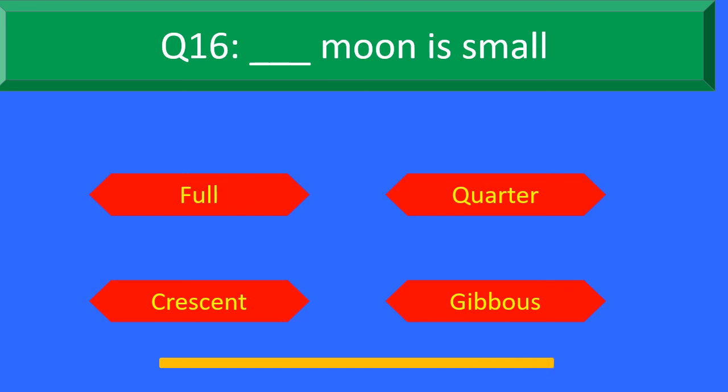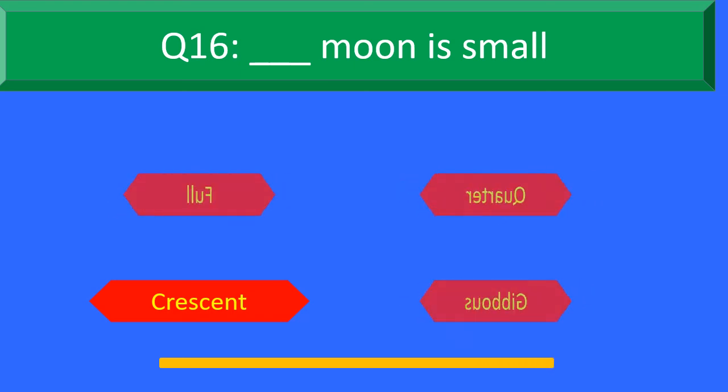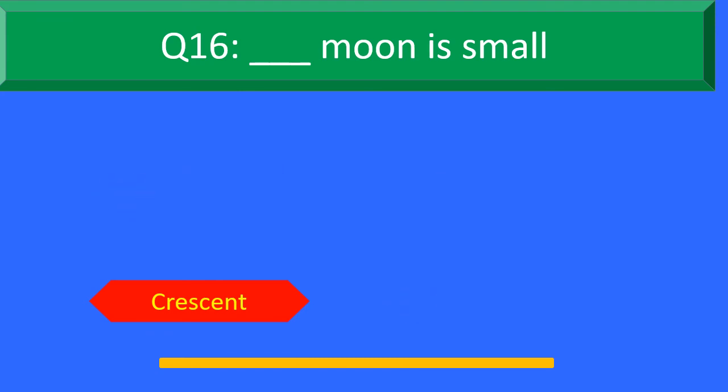The right answer is Option C: Crescent. Crescent moon is small.